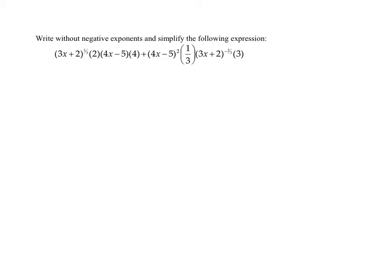So I need to look at each term separately. In the first term, notice I have four quantities multiplied together, and since I have a two and a four, I can multiply them together. And so I get two times four is eight times the quantity three x plus two to the one-third power times the quantity four x minus five.